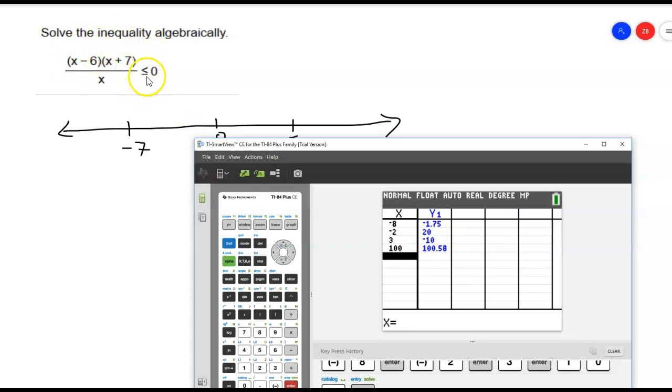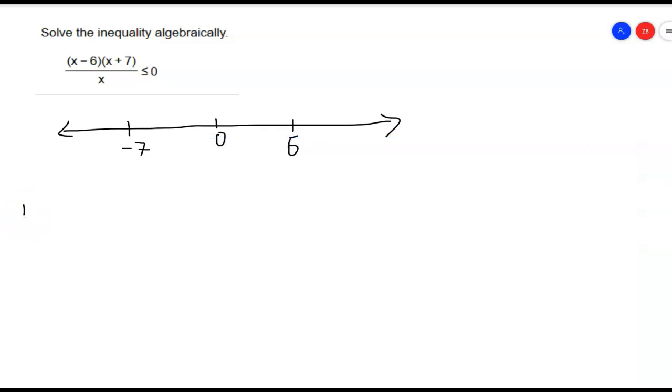So it looks like what we saw on our graph. That this function is going to be less than or equal to 0. So from negative infinity, negative infinity, all the way until I get to negative 7. And we're not going to include negative 7 because it makes... Oh, wait, we are going to include negative 7. Why?